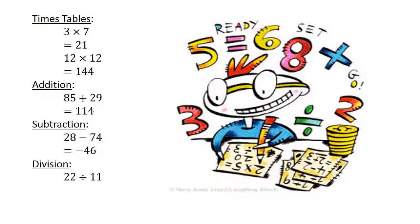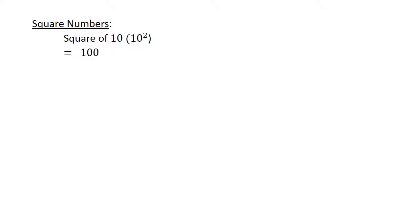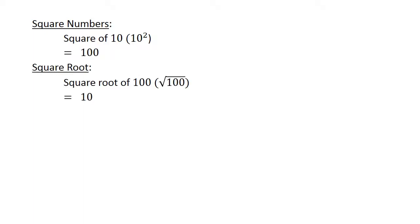Division: 22 divided by 11 equals 2. Square numbers: the square of 10 equals 100. The square root of 100 equals 10.